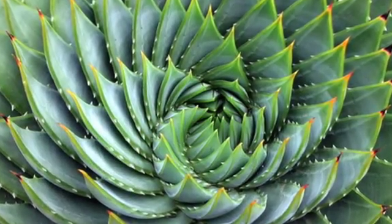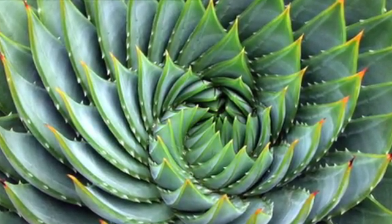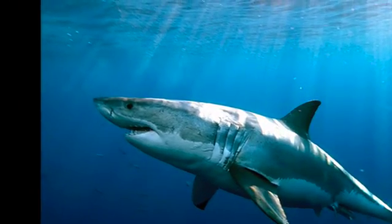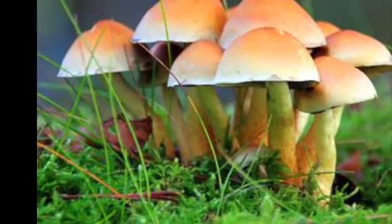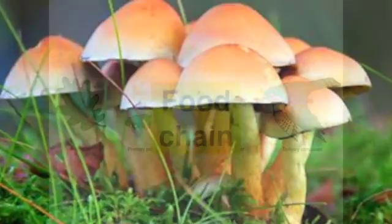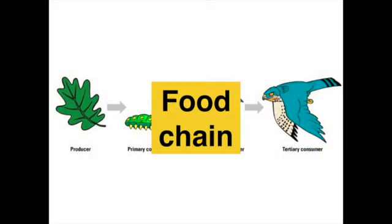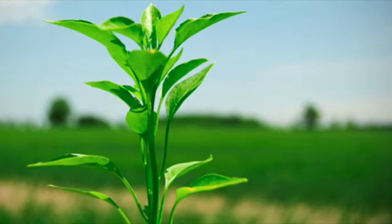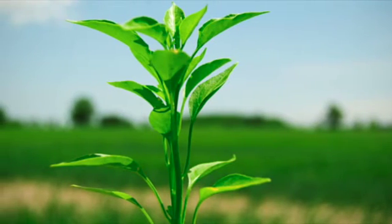Organic compounds fixed by autotrophs are the source of energy on which the rest of life on Earth depends. This energy stored in autotrophs is passed along through the ecosystem in a series of steps of eating and being eaten, known as a food chain. Feeding relationships within a food chain are defined in terms of trophic or consumer levels. All organisms that obtain their energy in the same number of steps from the primary producers belong to the same trophic level in the ecosystem.